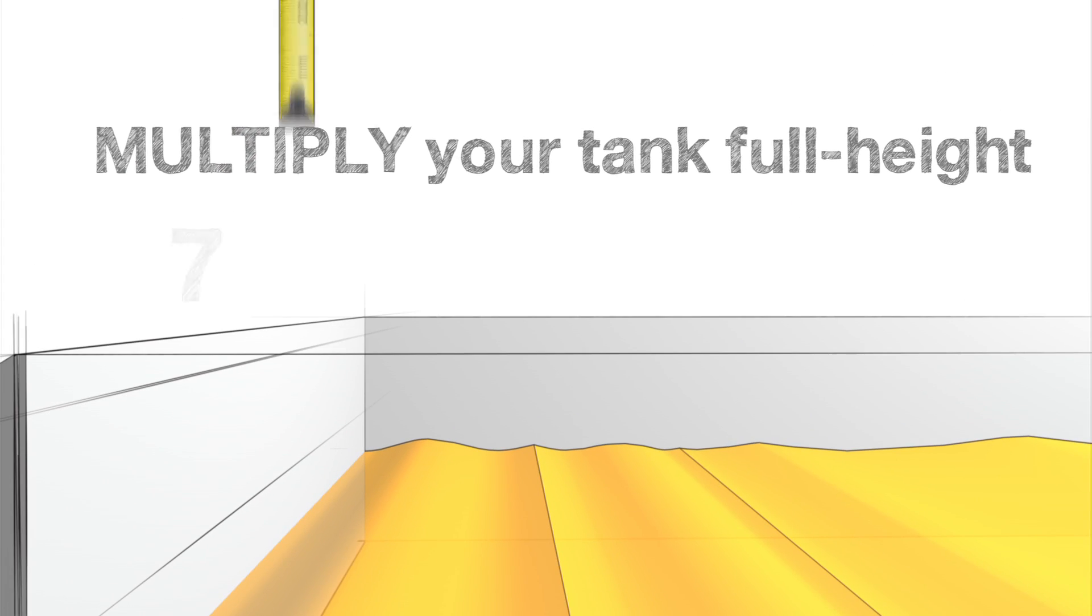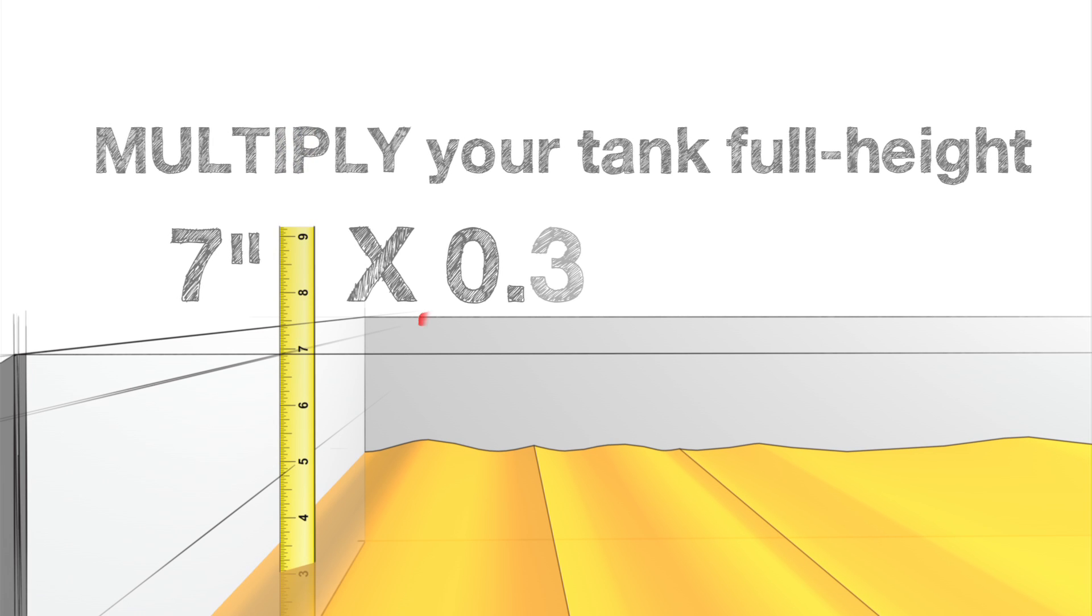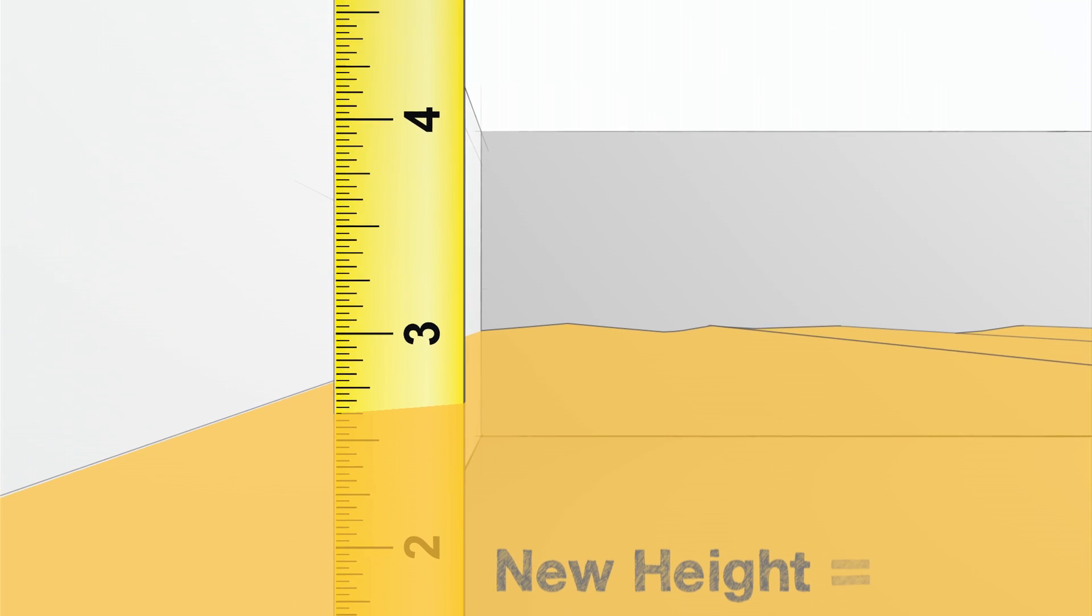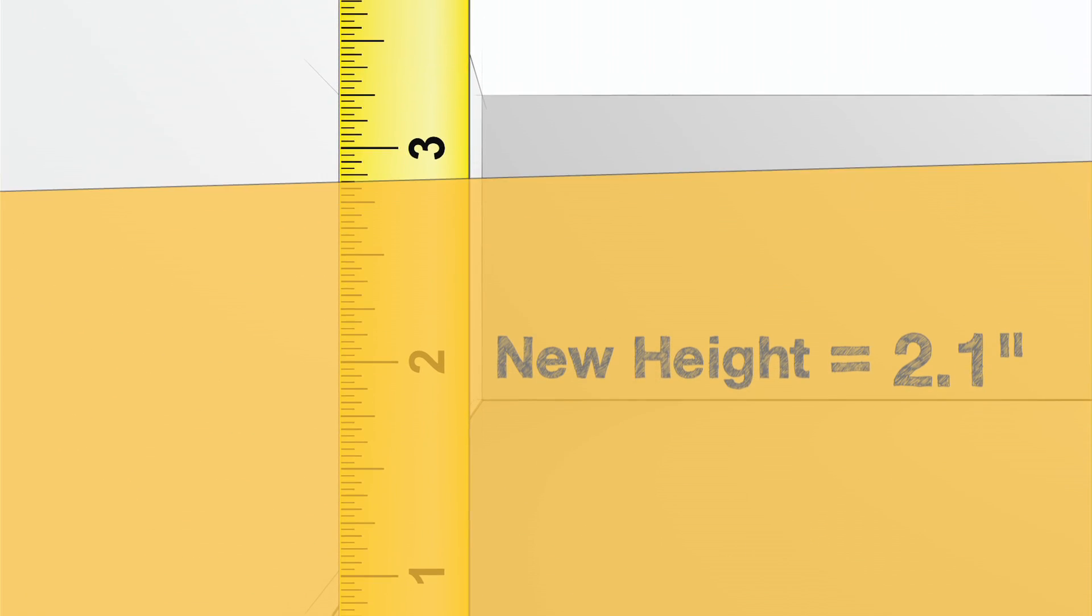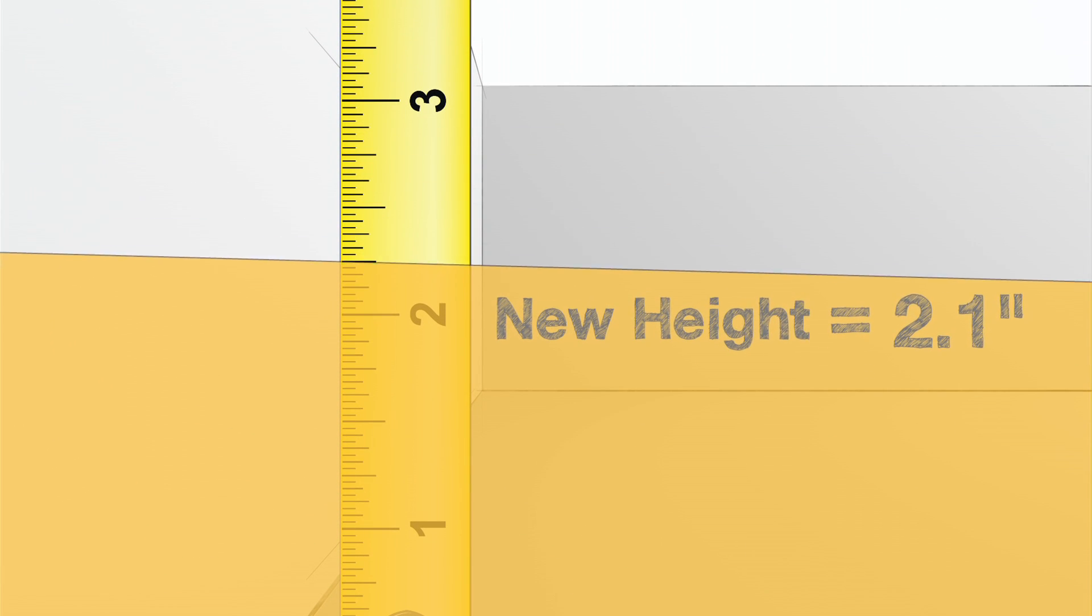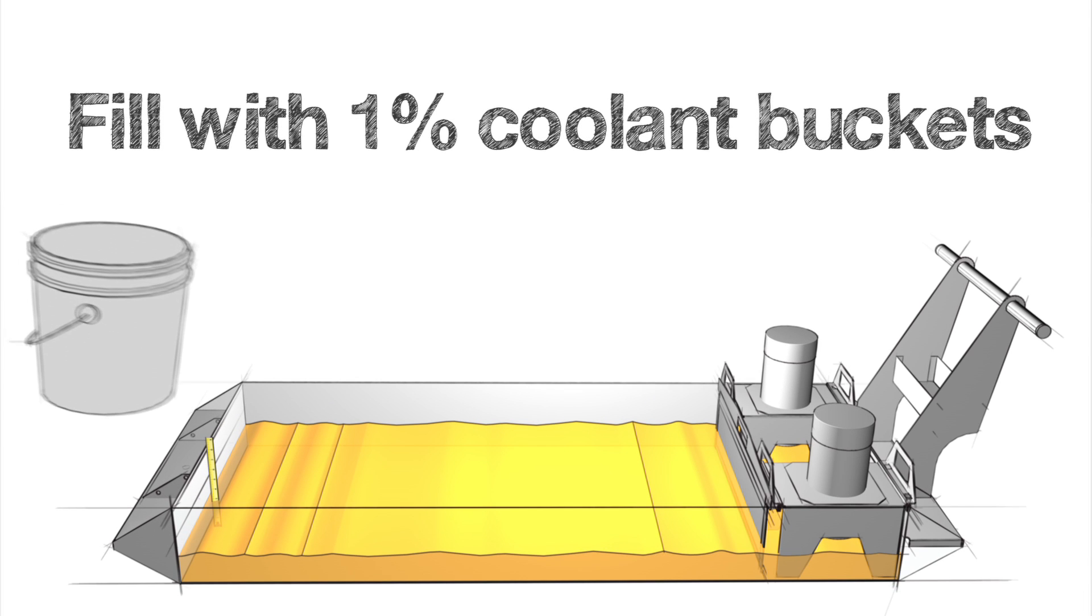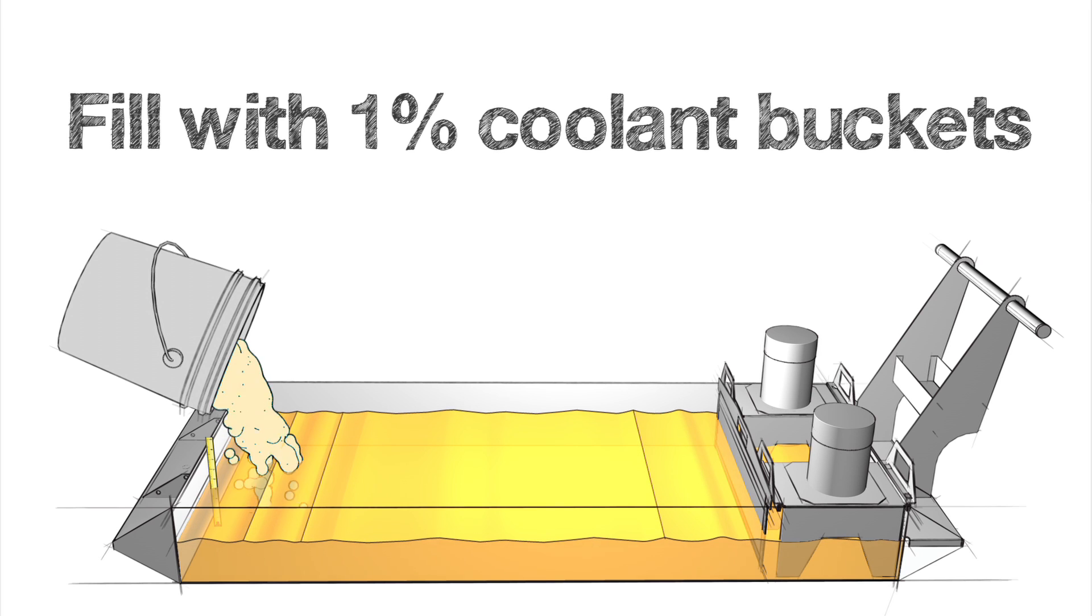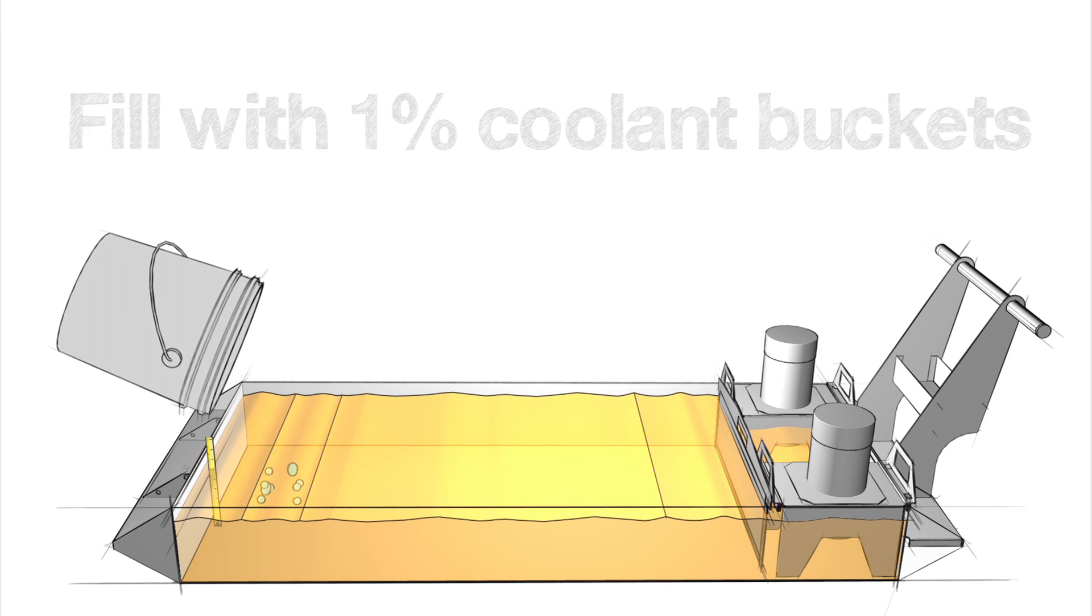Simple. Just multiply your tank full height by 0.3. This calculation gives you the exact measurement in inches to reduce your coolant level down to 30% full. Remove coolant until you get down to this measurement and fill with 1% coolant buckets. This will return any size of tank back to a concentration between 6 and 10%.